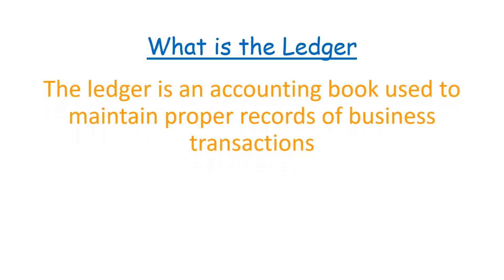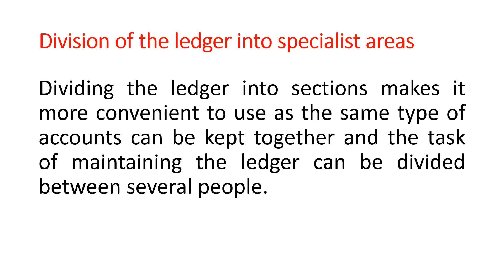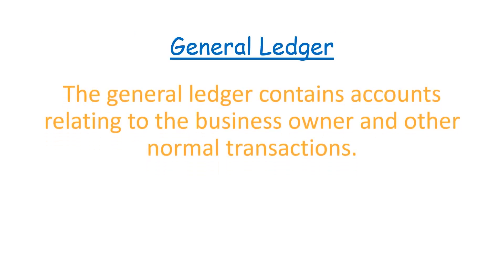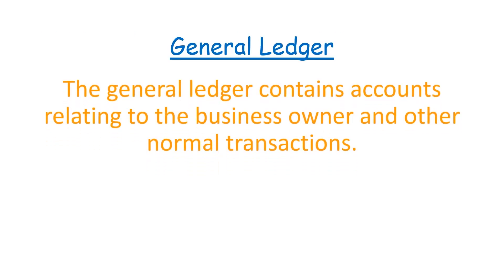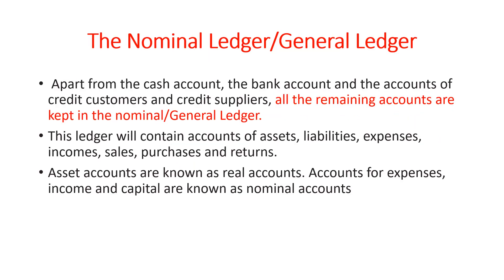The ledger is an accounting book used to maintain proper records of business transactions. Let's go straight into the three kinds of ledgers. We have the general ledger, which is simply a ledger that contains accounts relating to the owner of the business and other normal transactions.